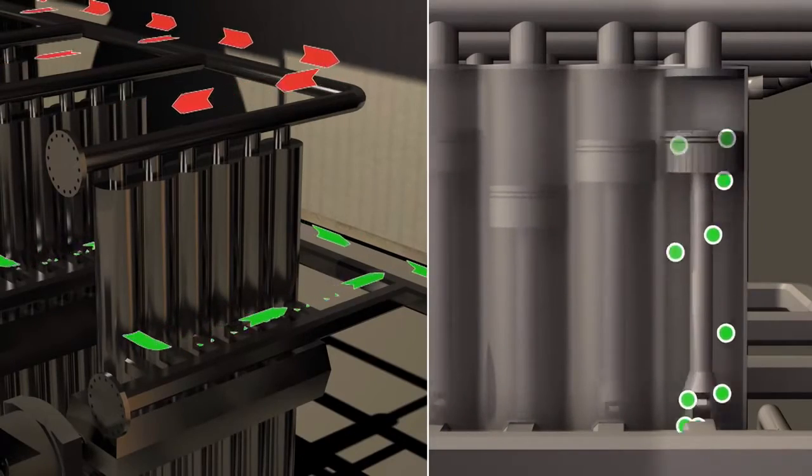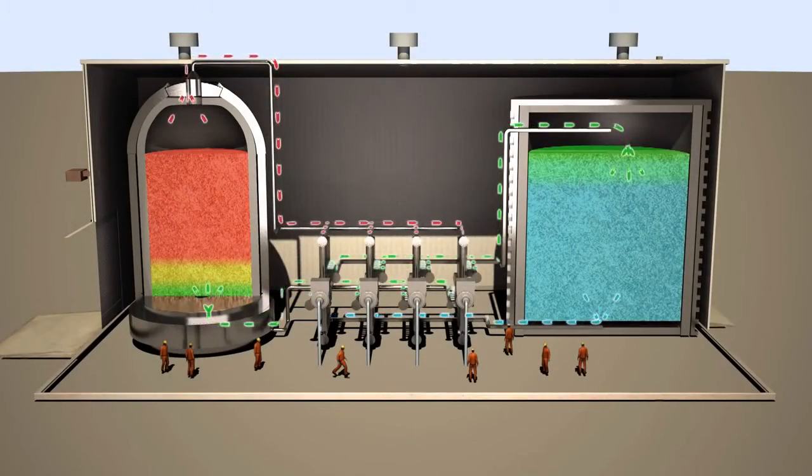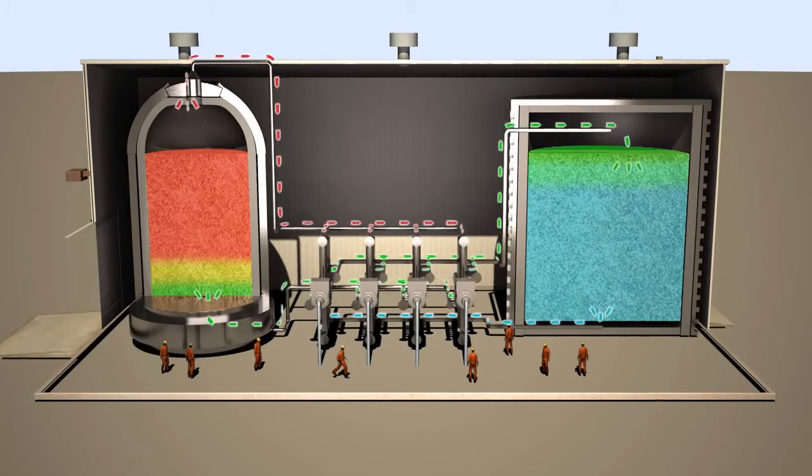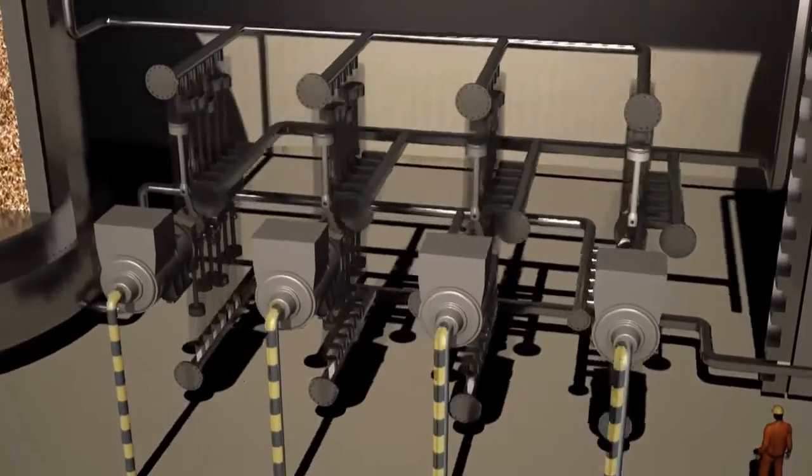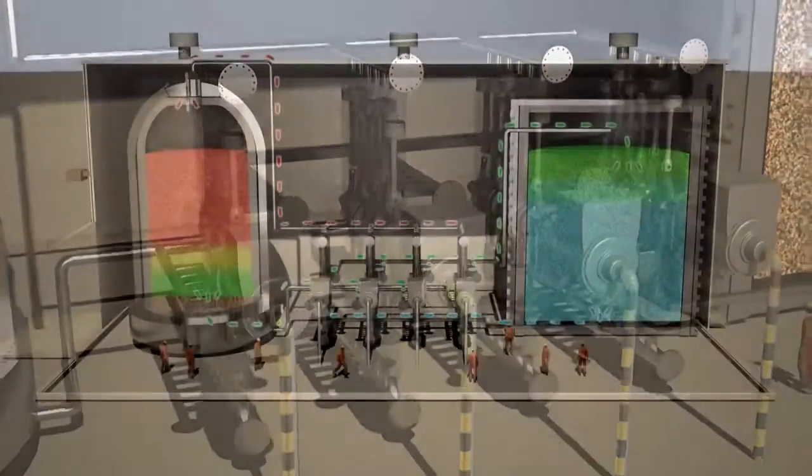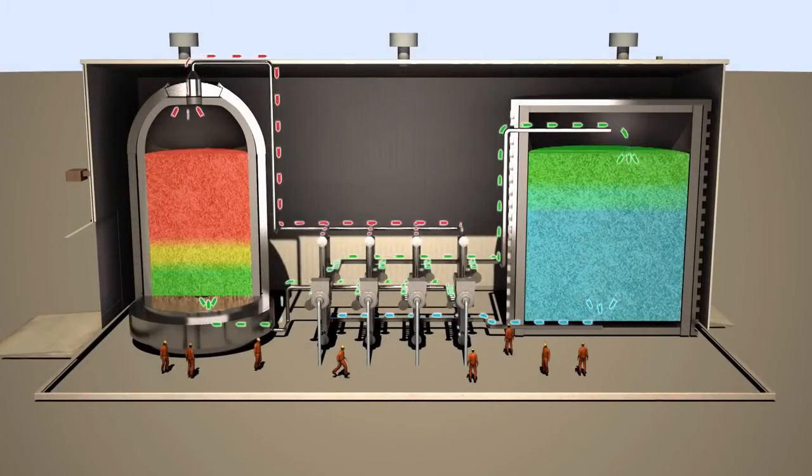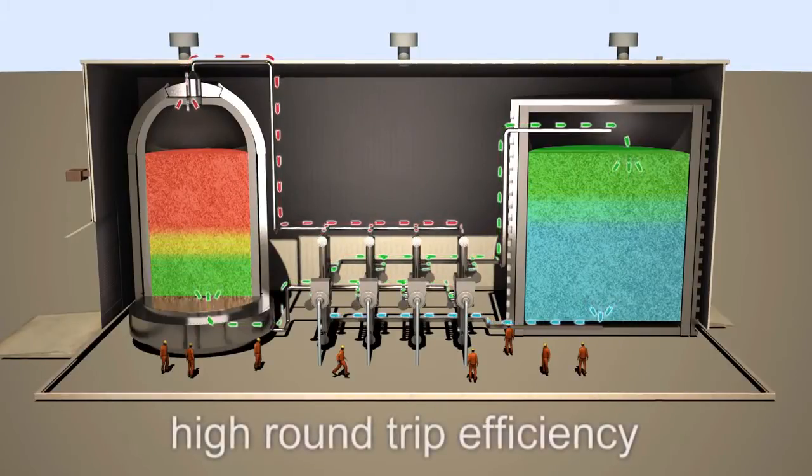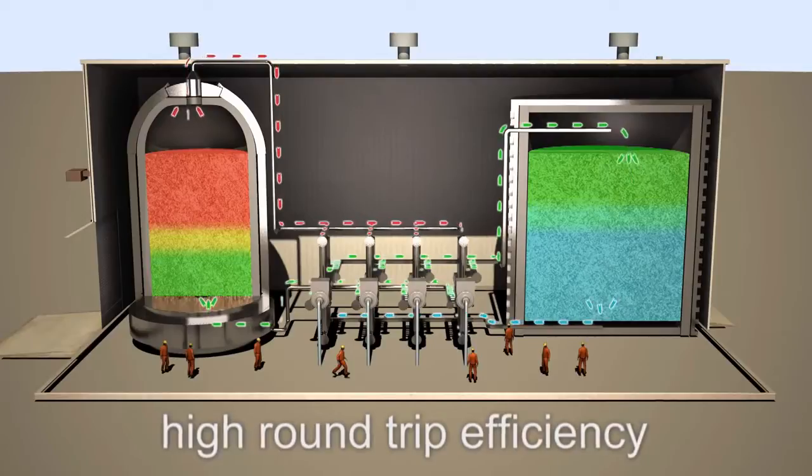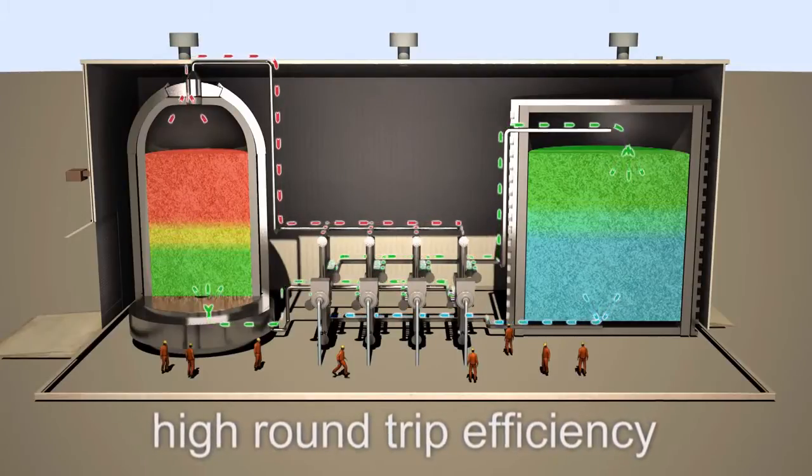When the gas circulates in reverse, the system acts as a heat engine to drive the generators and convert the energy back to the grid as electricity. As the stored energy is released, the thermal fronts in the stores move in the opposite directions. The whole round-trip efficiency of these charging and discharging cycles is as high as pumped hydropower.